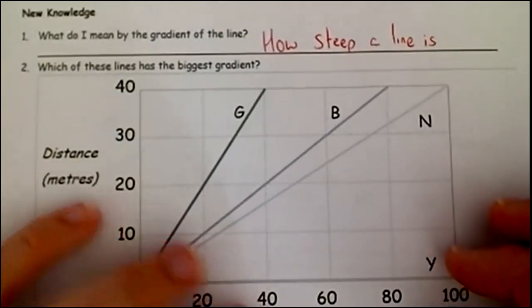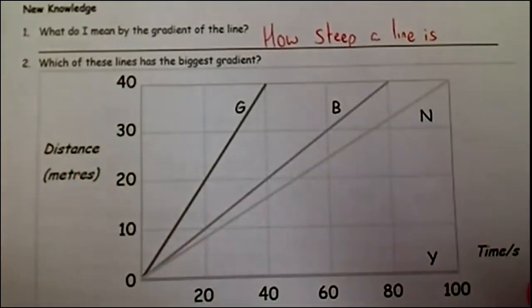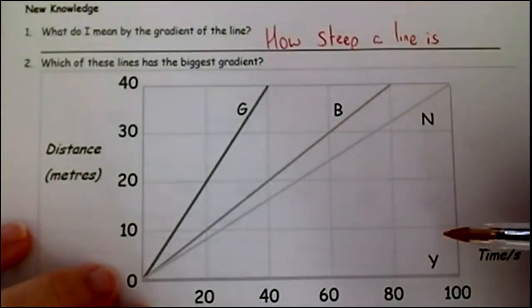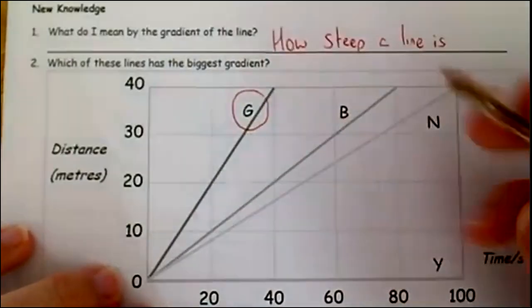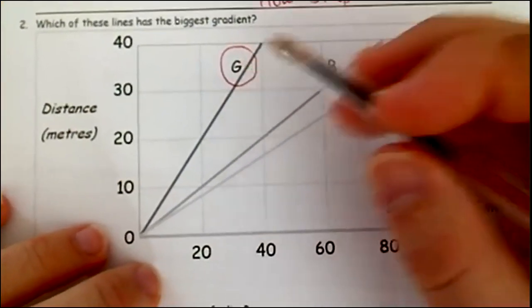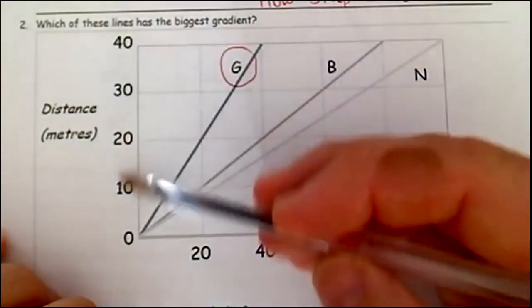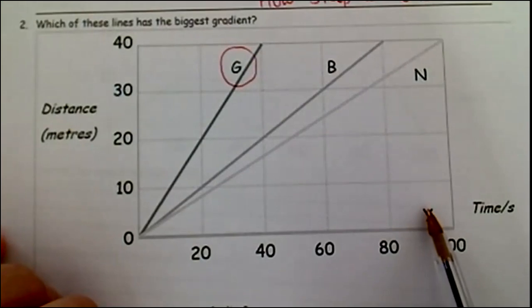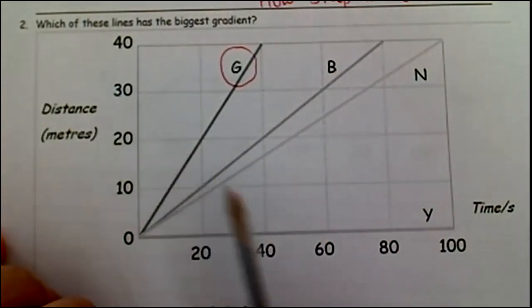Question two says, which of these lines has the biggest gradient? If we look at the options we've got here, G, B, N, and Y, we're looking at steepness, and the steepest line is G. So G has the highest gradient. On a distance time graph, you can hopefully see you've got distance on your y-axis, and time along your x-axis. That's really important to remember.